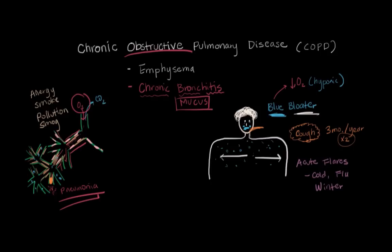So coming back to the beginning — the theme of our day is mucus production. A person with chronic bronchitis will have a nagging cough, they'll be hypoxic with not enough oxygen in their blood, and they'll be bloated from trying to take deep breaths while not being able to breathe out all the extra air.